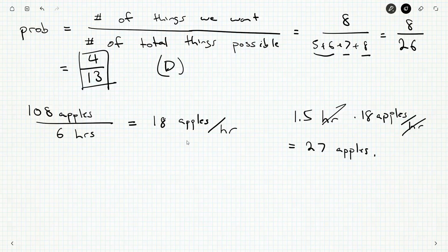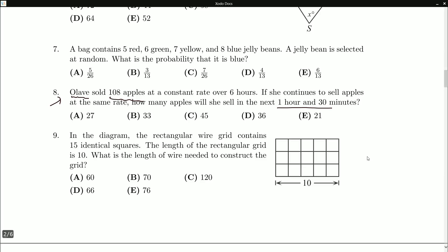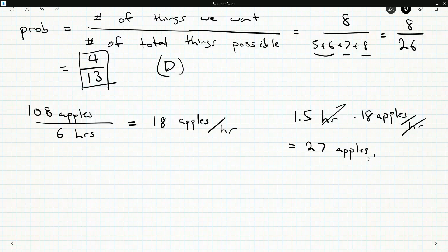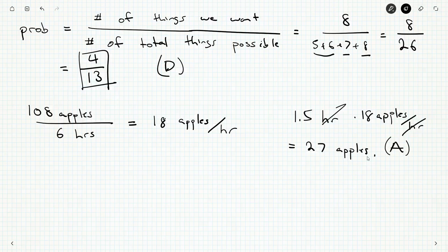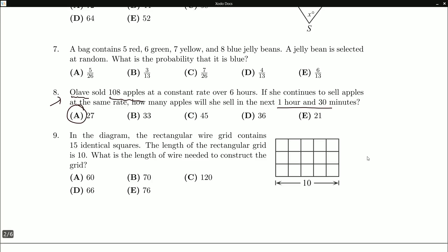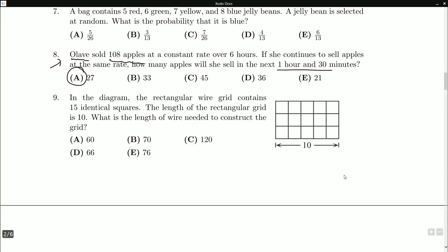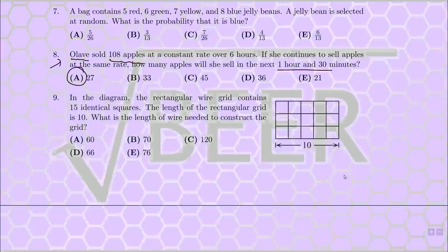So that's how many she should expect to sell. And there we go, that's A. Olav sells 27 apples, and that's A. So that's about it, not really anything more to comment on that one. I will see you guys for question number nine in the next video.